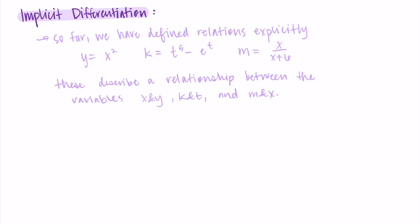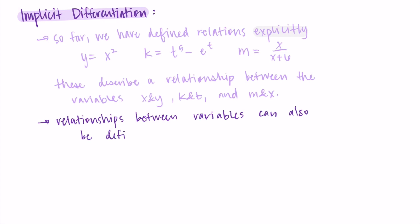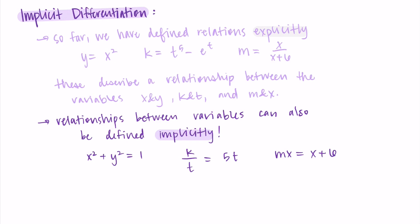But we can also define relationships between variables implicitly. This really just means that the variables are all tangled up in each other. They still depend on one another — y depends on x, k depends on t, m depends on x — but it's just harder to see that relationship because we don't just have y equals, k equals, m equals. For example, we could have x squared plus y squared equals one, k over t equals five t, or mx equals x plus six. The variables are still related, it's just not as clear what that relationship is. It's implicit because the variables are all tangled up.